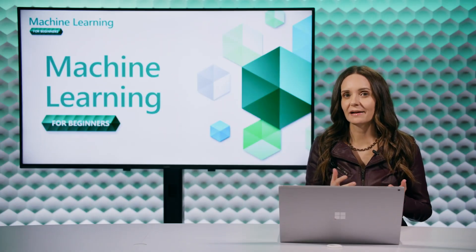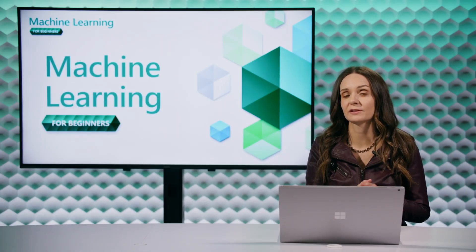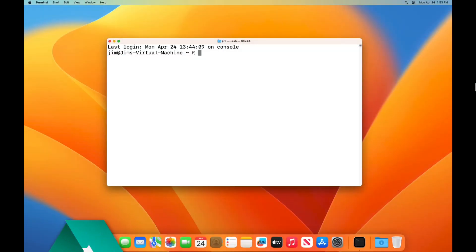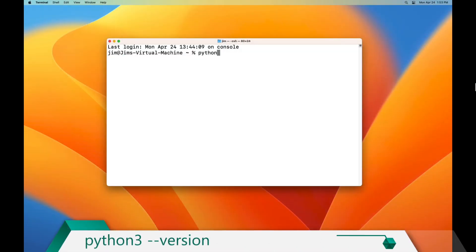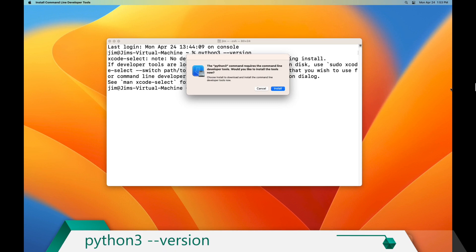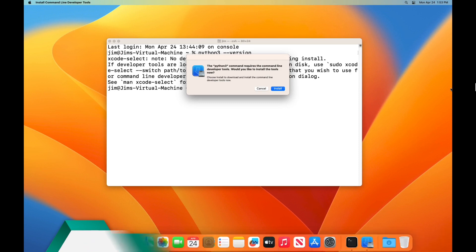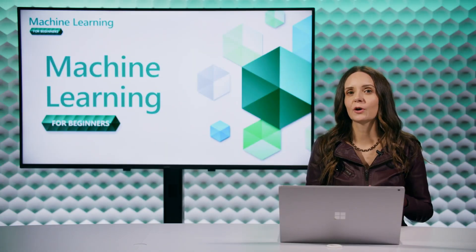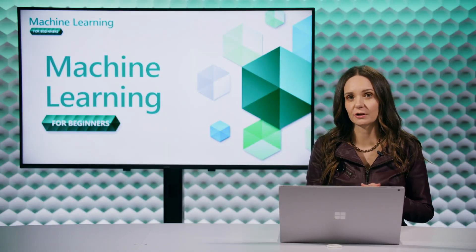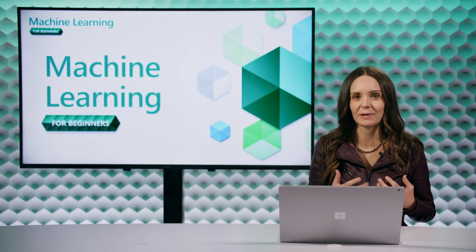If you're using a Mac, you may or may not have Python installed by default. If you don't have it, macOS will give you the option to install it from the command line when you run the command python3 --version. If you have an older version installed, make sure to check the macOS software update tool for newer versions of the command line tools. If you're a Homebrew user on macOS, you can use it to install Python — search the Homebrew site for the latest version and the install command.